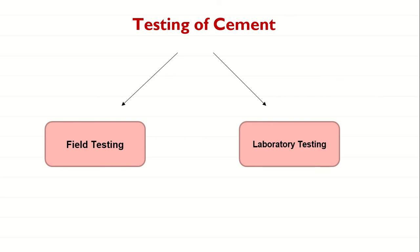The assessment of the quality of cement in the lab is carried out by comparing lab test results with the values given in respective IS codes. Field testing does not give accurate results — accurate assessment is not possible — and hence one has to go for laboratory testing. So let's get into field testing of cement.